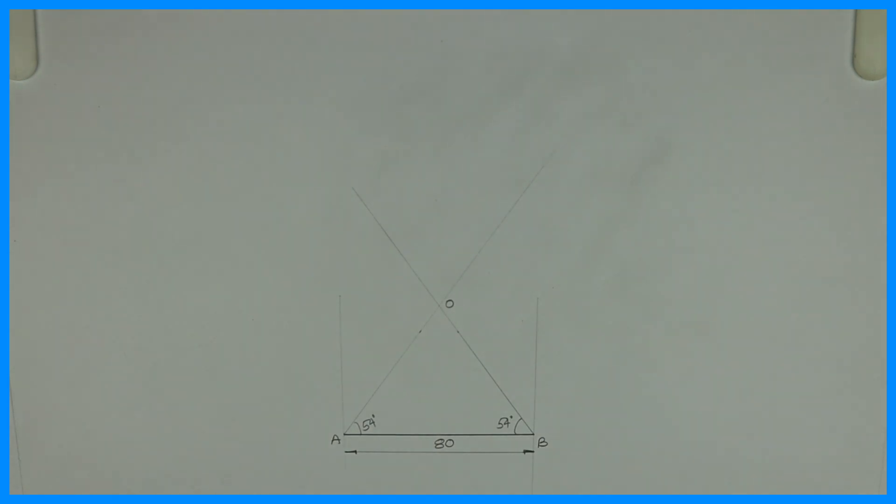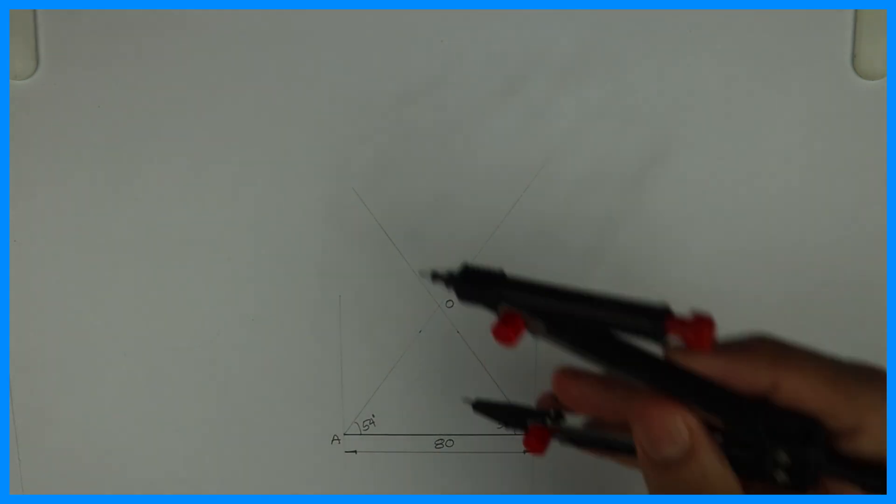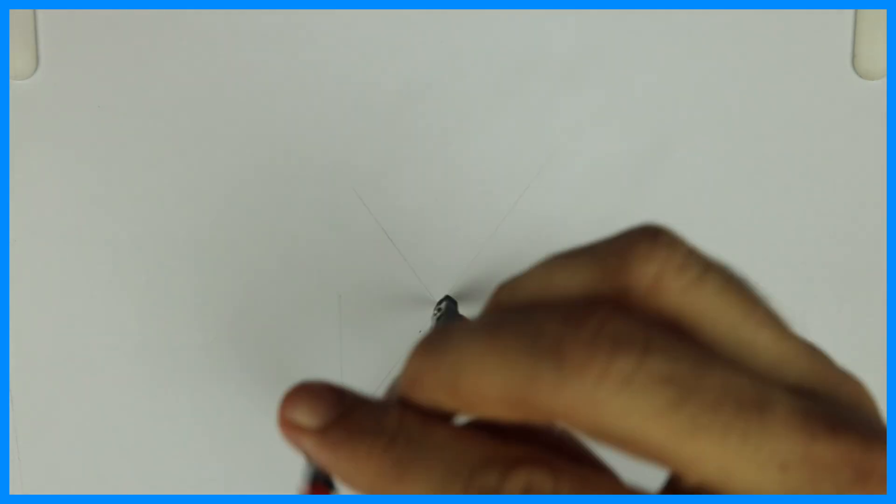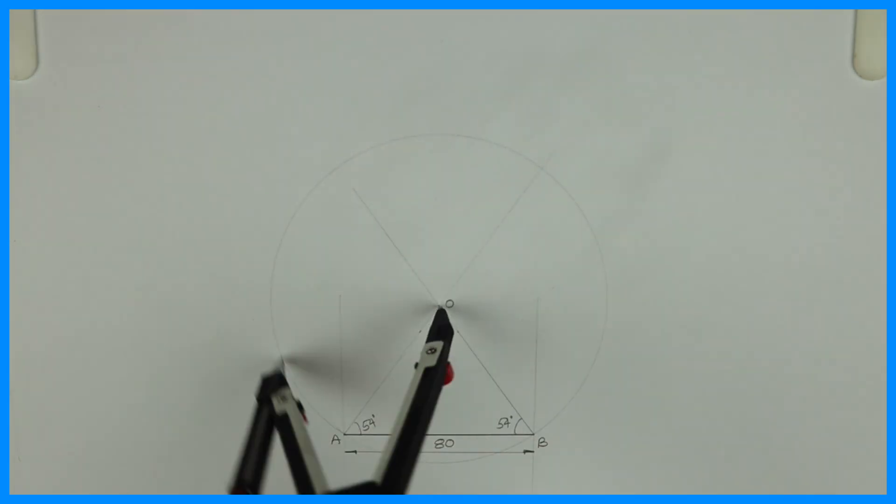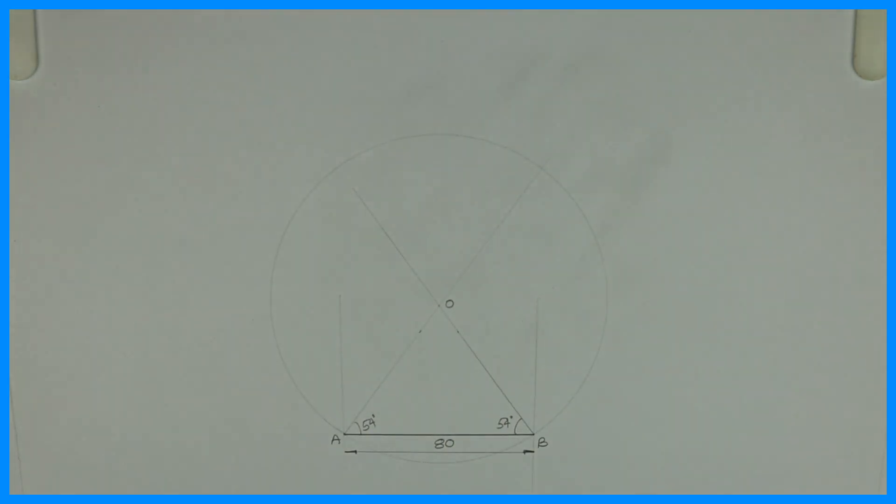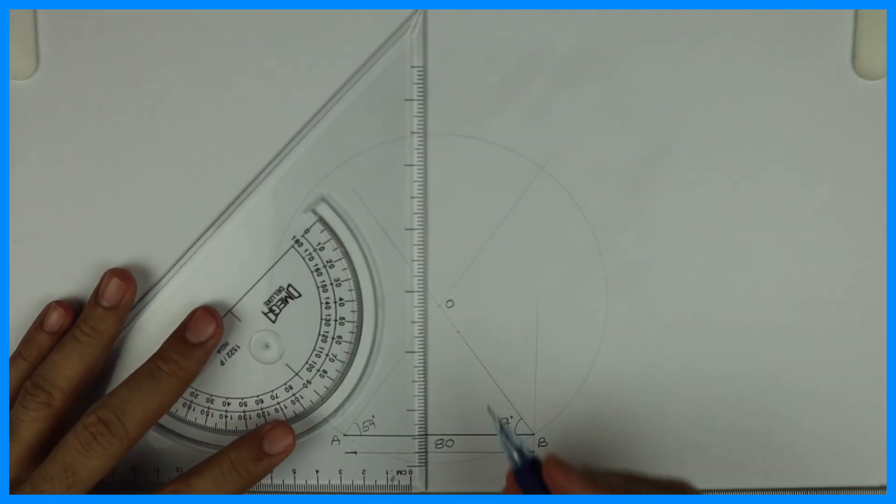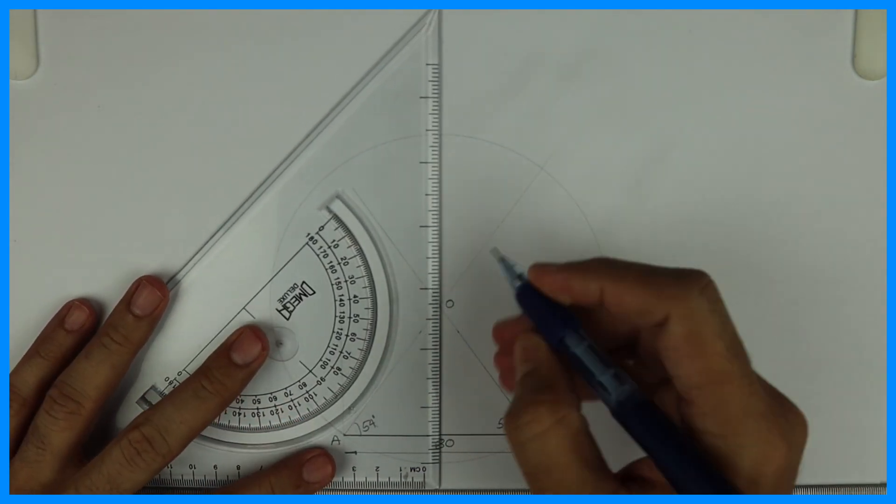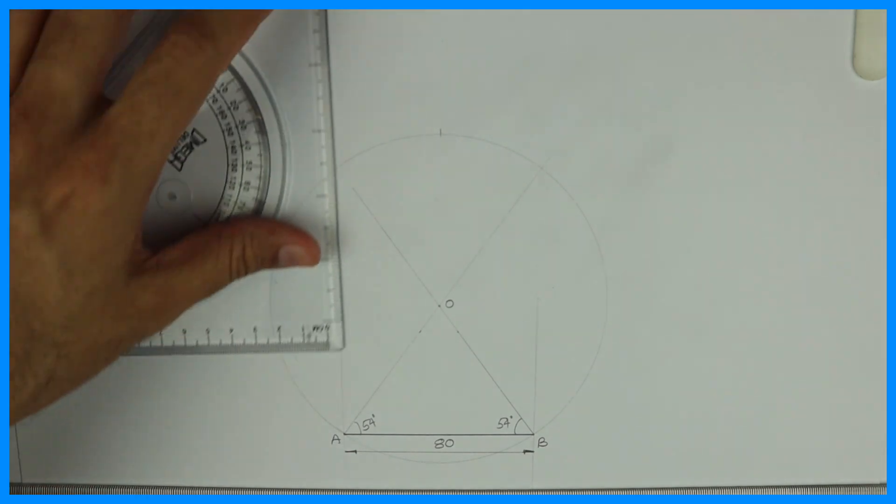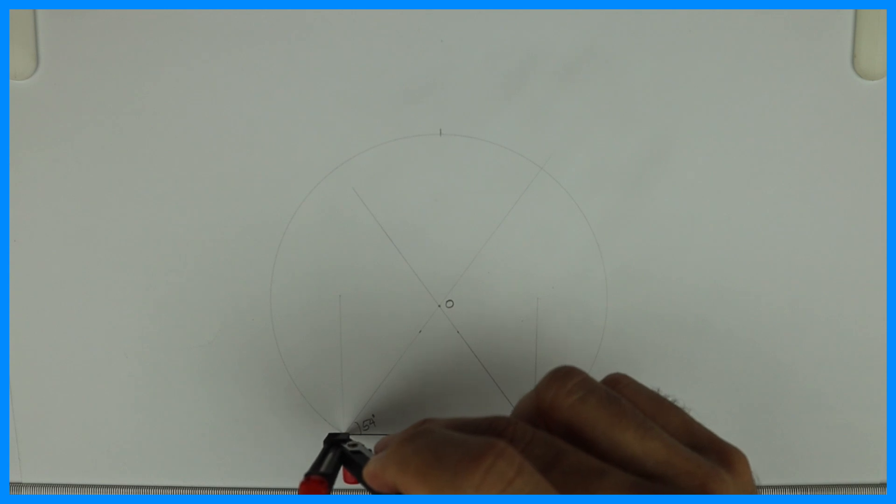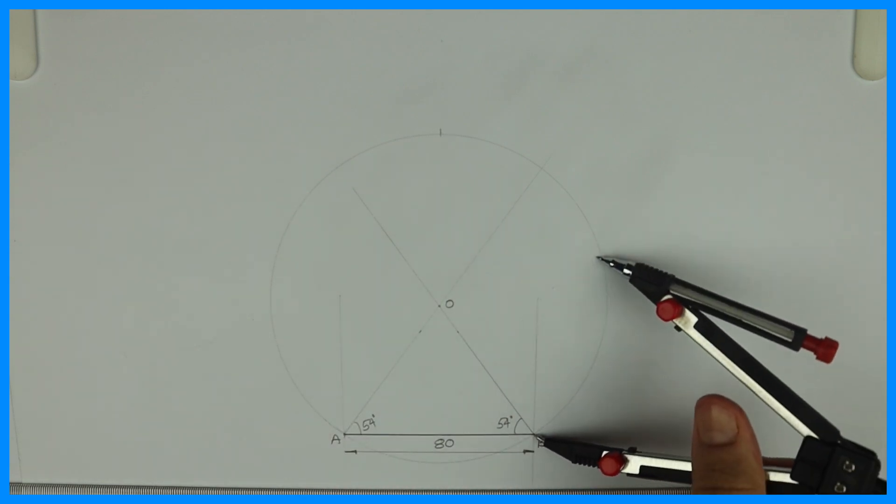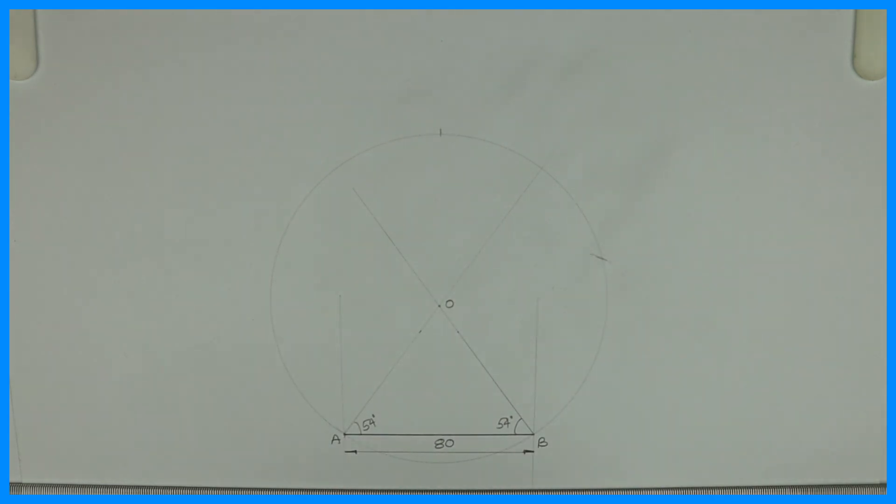Then you take O to A and draw a circle. Then you take side AB, and from B you cut on the right side and from A you cut on the left side. This is C.